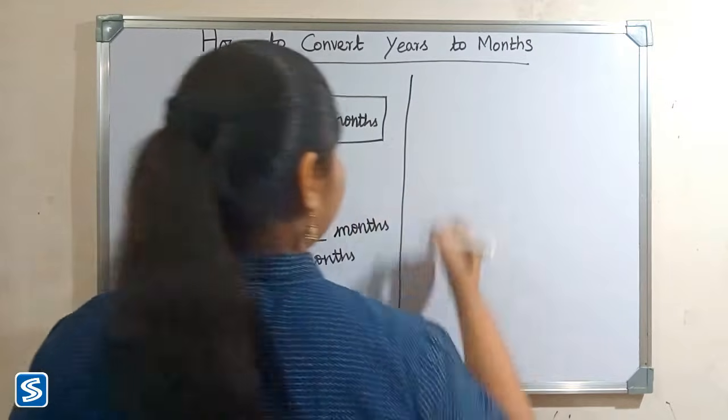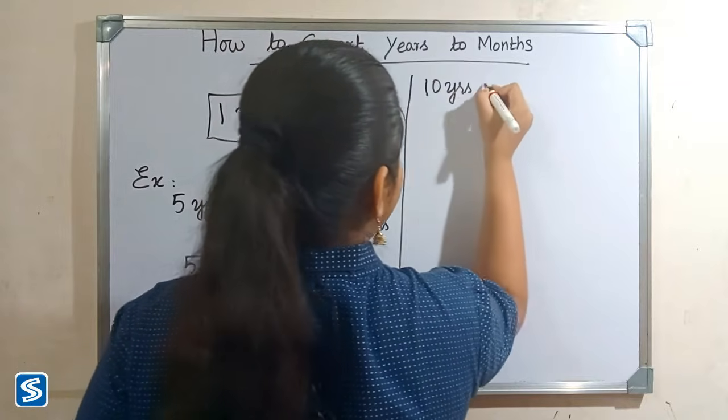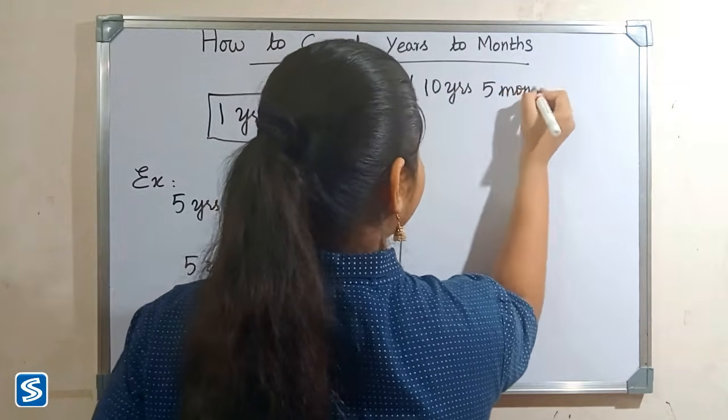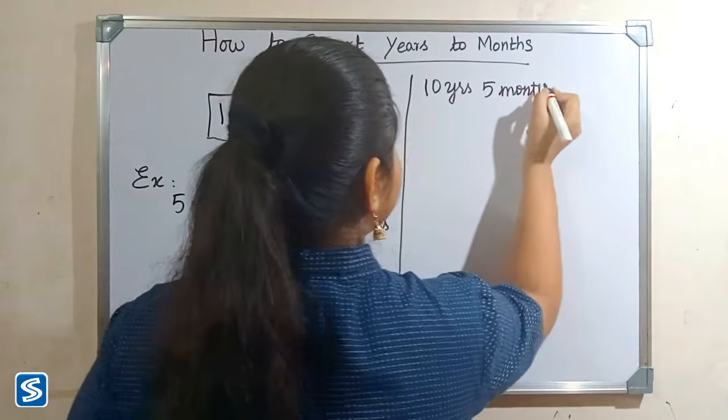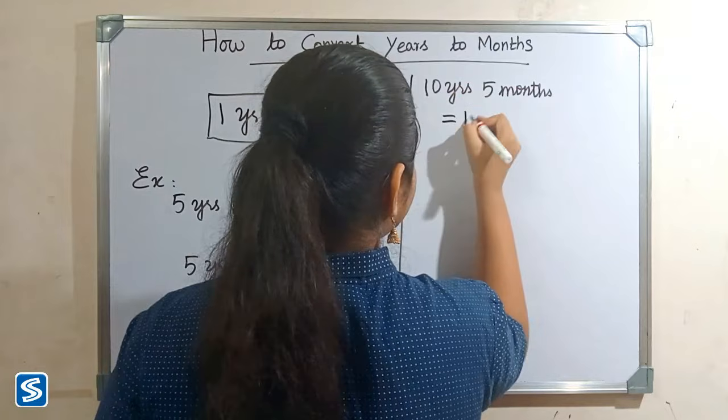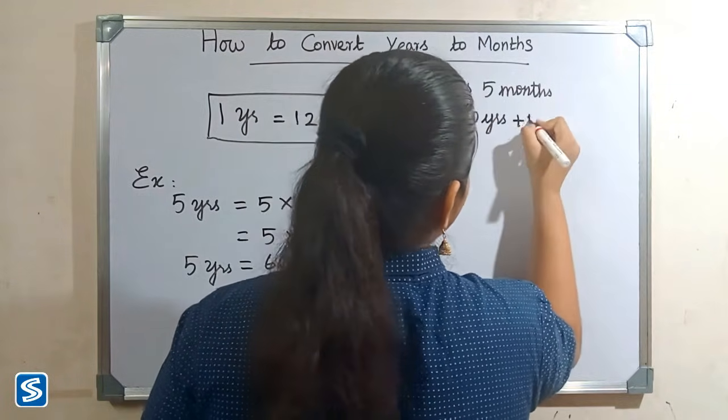For example, we can take 10 years 5 months. So 10 years 5 months will be 10 years plus 5 months.